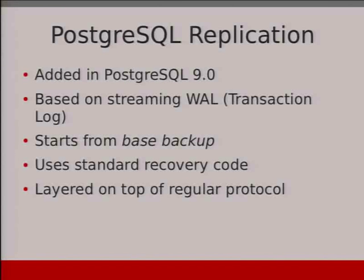When we talk about the Postgres Replication Protocol, we talk about the new stuff added in Postgres 9 — the streaming replication part. Hot standby is obviously important, but streaming replication is the protocol level and the lower layer of how we transport and deal with replication traffic between our primaries and slaves. It's based on streaming the transaction log, or as we call it in Postgres, the WAL — the write-ahead log. It's exactly the same thing with two names.